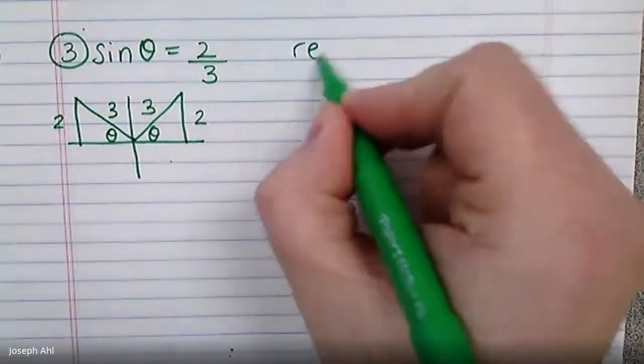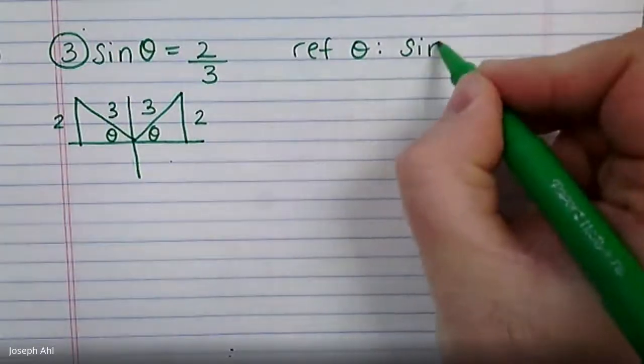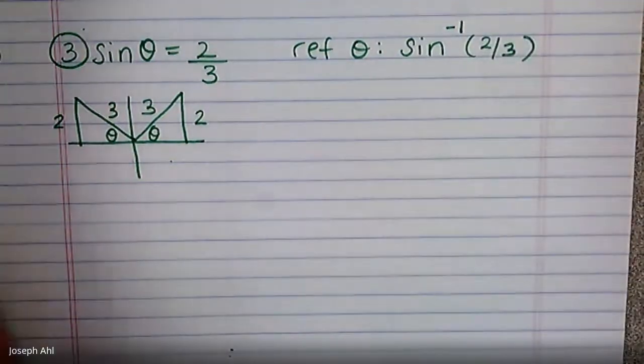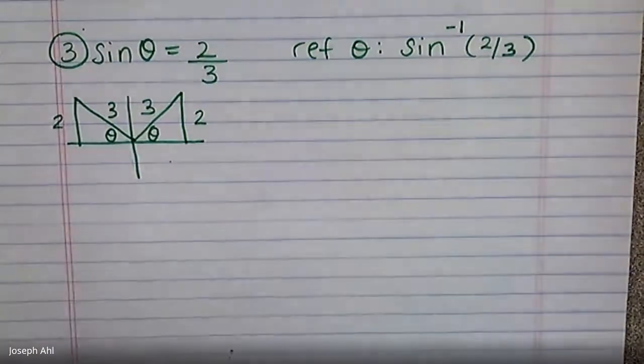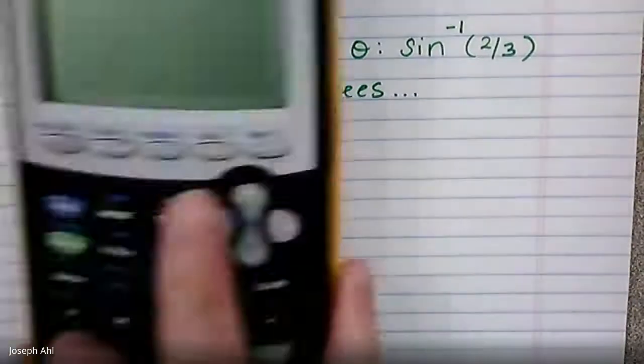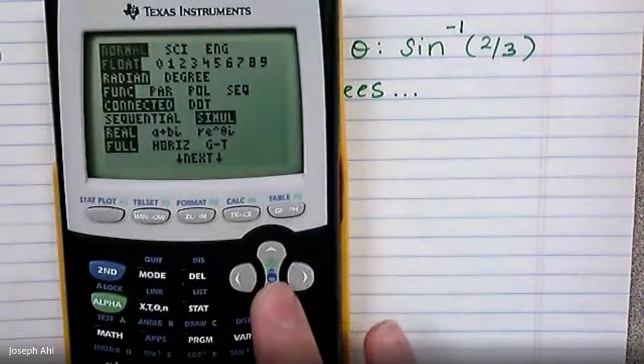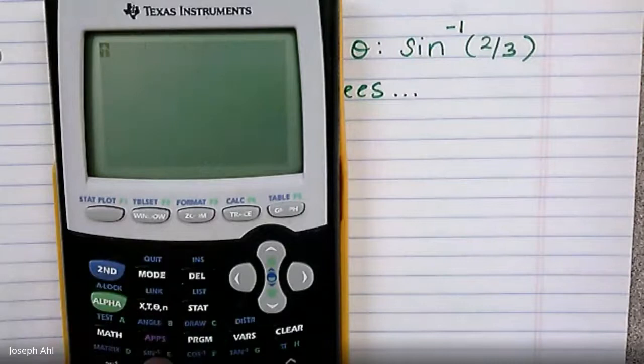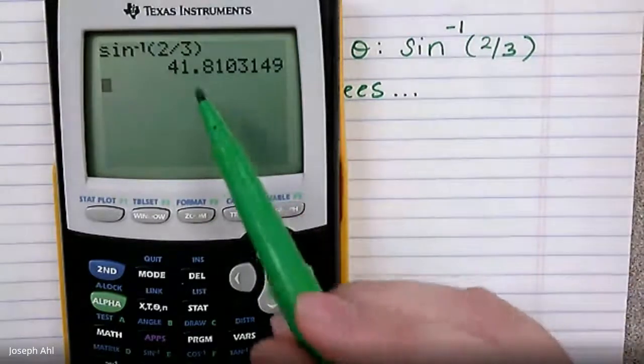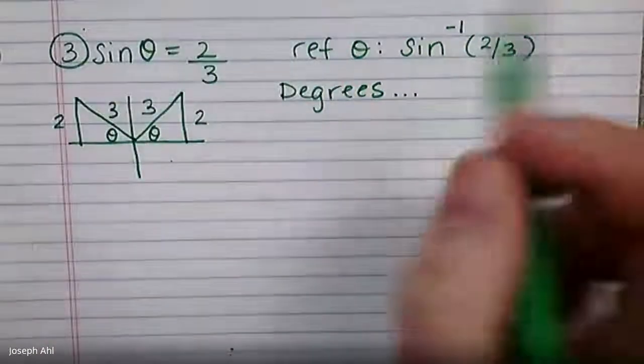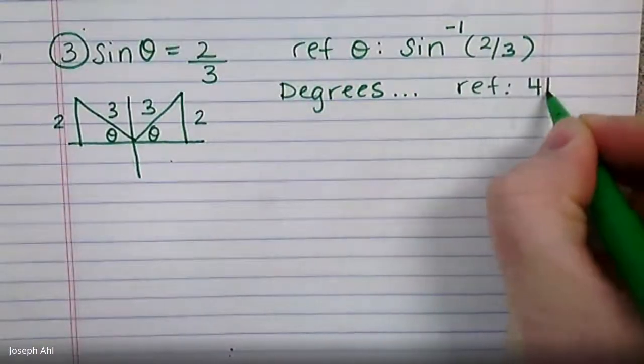So what we have to do to find the reference angle here is we're going to type in sine inverse of two thirds. So what I want you to double check right now is what mode your calculator is, because we're going to do degrees first. If I go to mode right now, my calculator is in radian. I'm going to switch it over to degree. Quit that screen and do second sine. Second sine of two thirds, and this will give me the reference angle that we're working with. It's 41.81 dot dot dot. Let's go to the nearest tenth of a degree. Let's say that the reference angle here is 41.8 degrees.